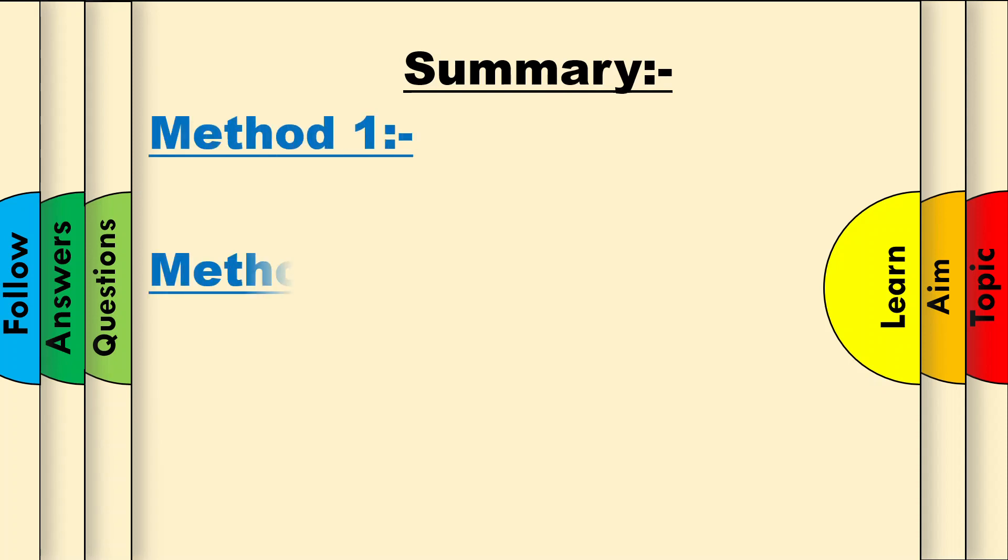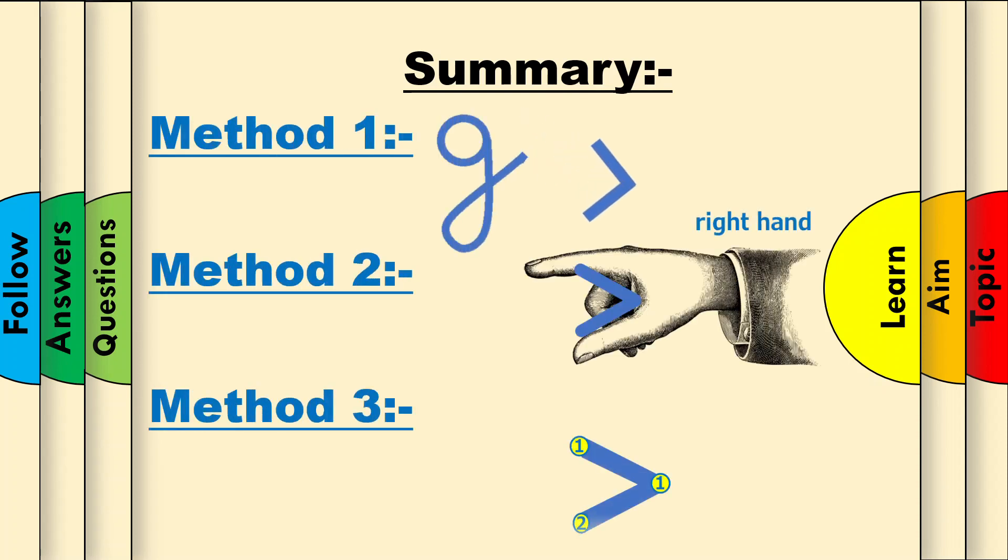Summary. We learnt three methods. The g, our right hand, and the points.